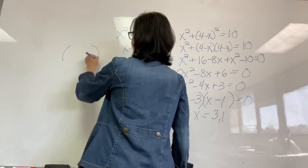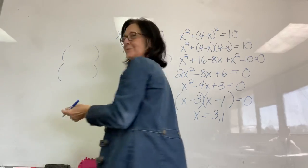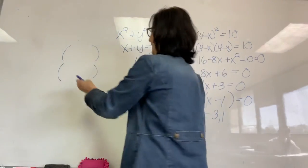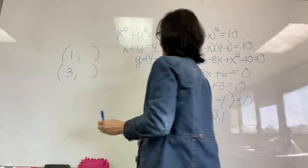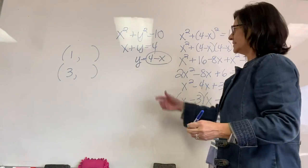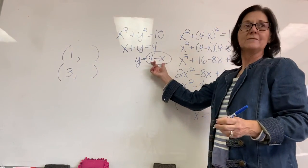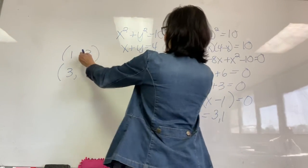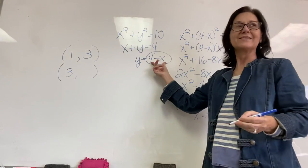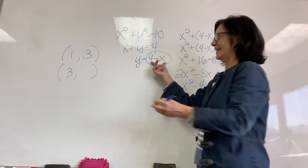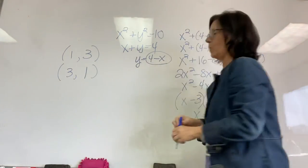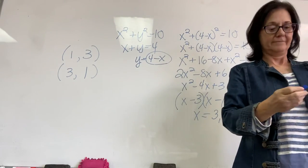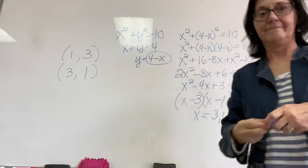Alright, so this one is so much easier than those with the radicals in it, doesn't it? So, we have x is 1 and x is 3. Alright, let's just look at this. 4 minus 1 gives me the y value. What is it? 3. 4 minus 3 gives me the y value. It is 1.